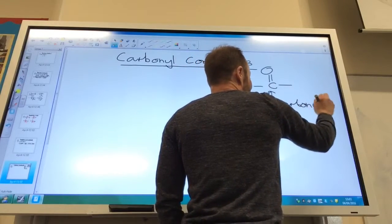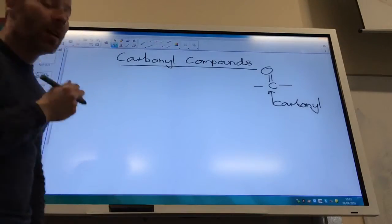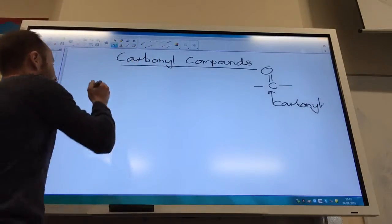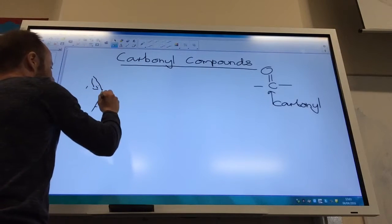We're going to talk about them a little bit at AS, but far more at A2. There are two different types of carbonyl compounds. The first type are aldehydes.